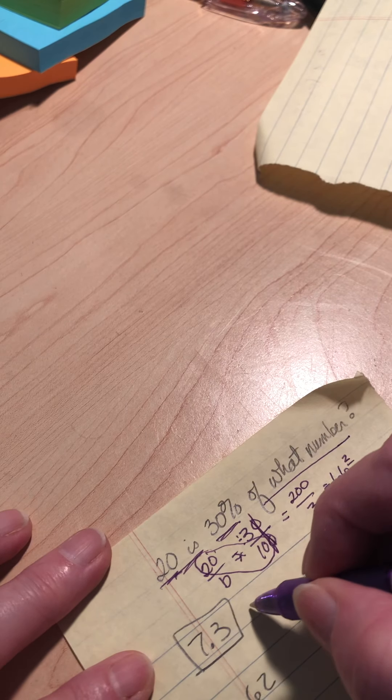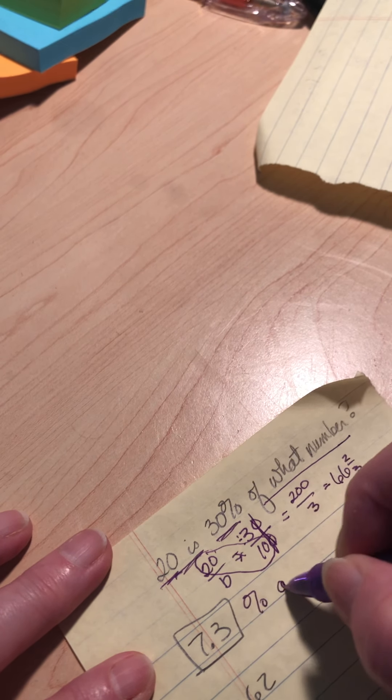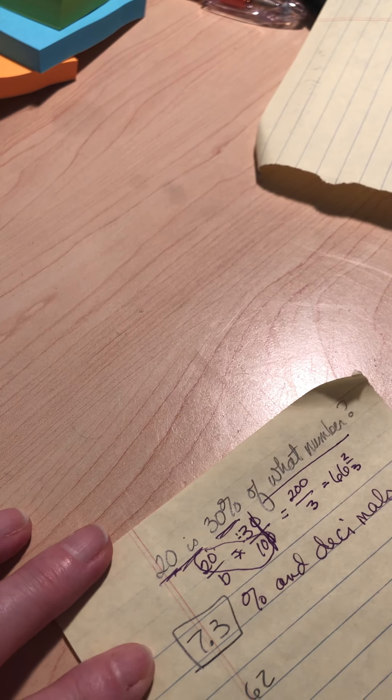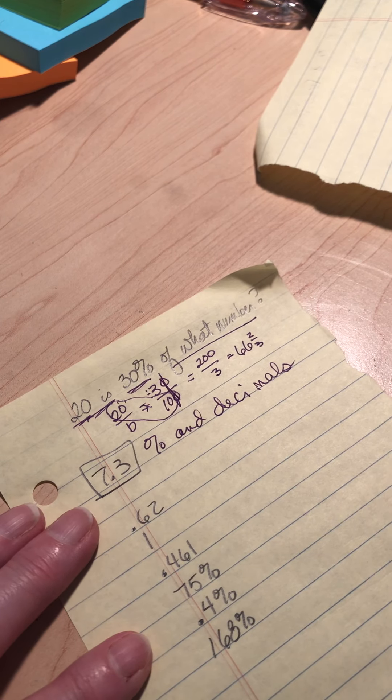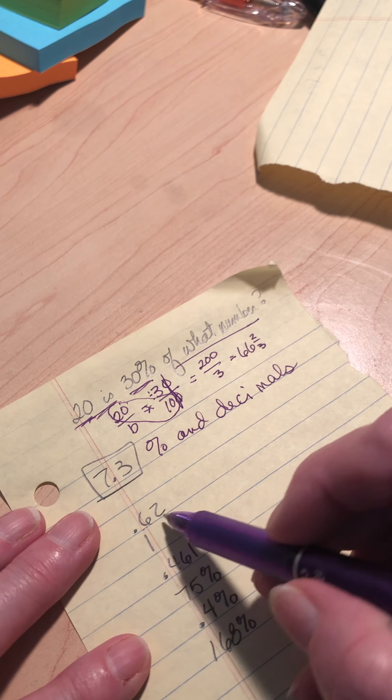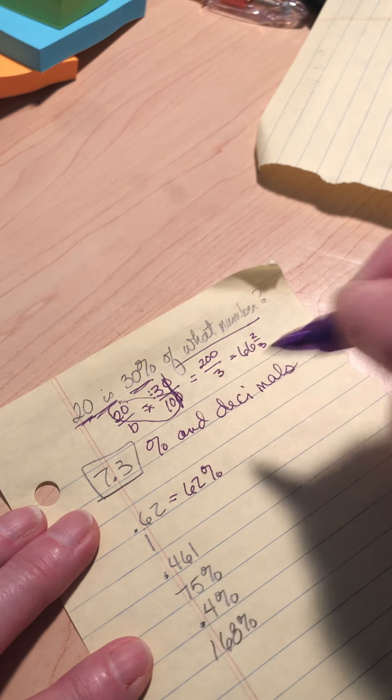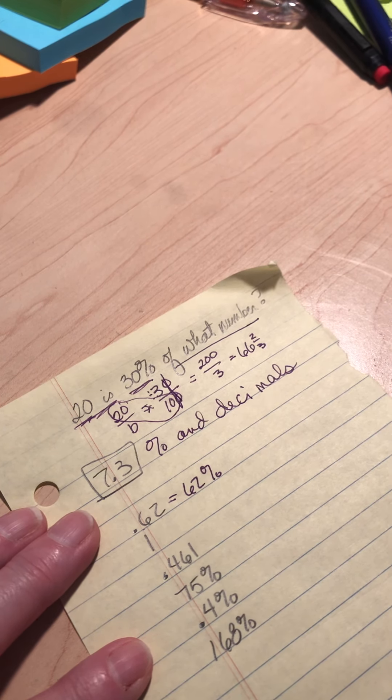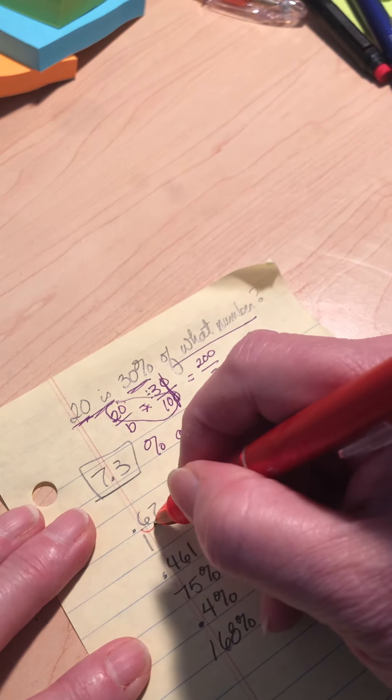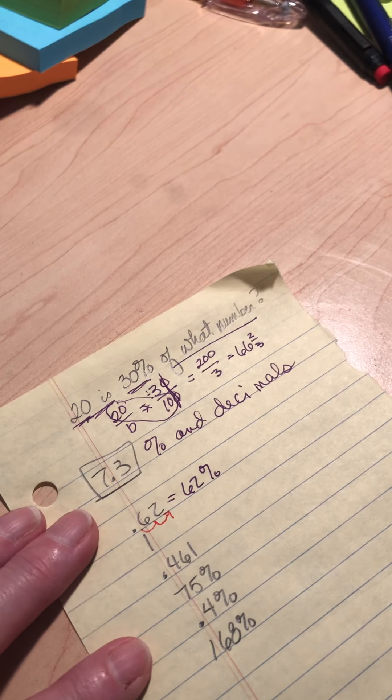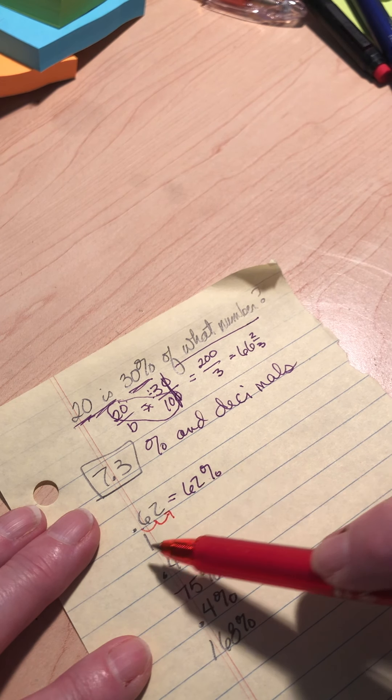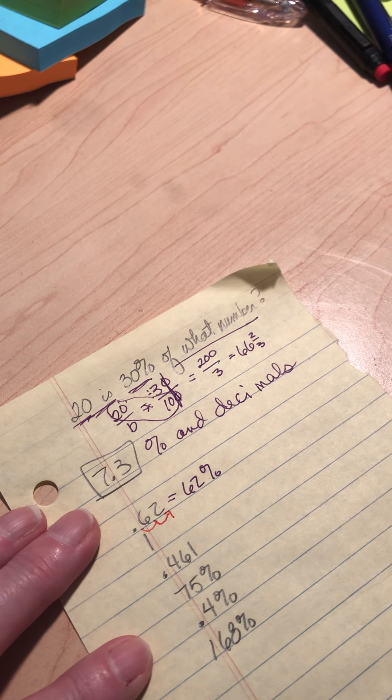7.3 was all about percents and decimals. And remember, you remember that percent means hundredths. So hey, this says 62 hundredths. So it's going to equal 62%. And the thing you've got to remember is this is where we're just moving that decimal. So you've just got to know which way to move it. And it makes sense. 62 hundredths, 62%. So I move it to that way.